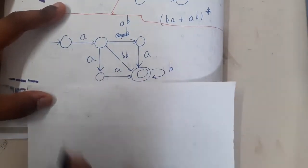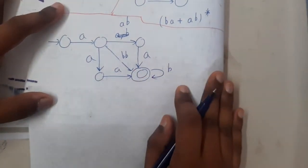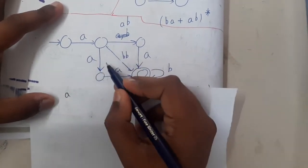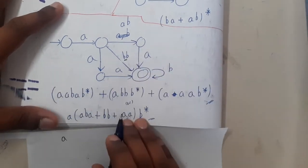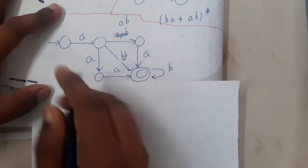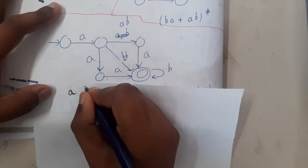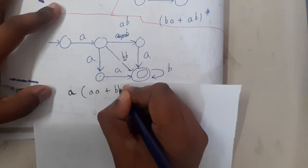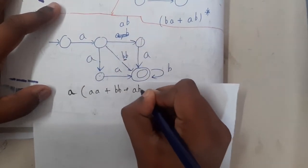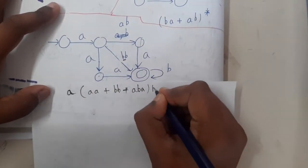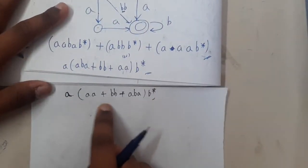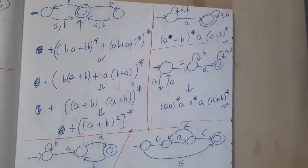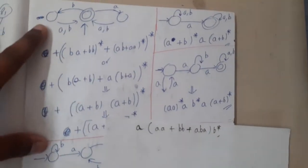This next question seems really interesting. One 'a' is mandatory. After that I have three options — a double 'b' path, a path with 'a', and a path with 'bb'. So the expression inside is (a + bb + ba). Then I can roam in b-star as many times as I want. The full answer is a(a + bb + ba)b*, which is matching with the answer in our book.